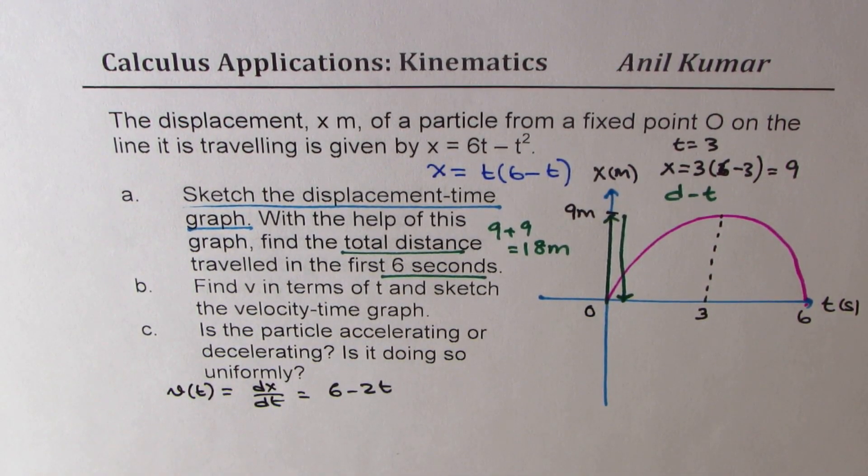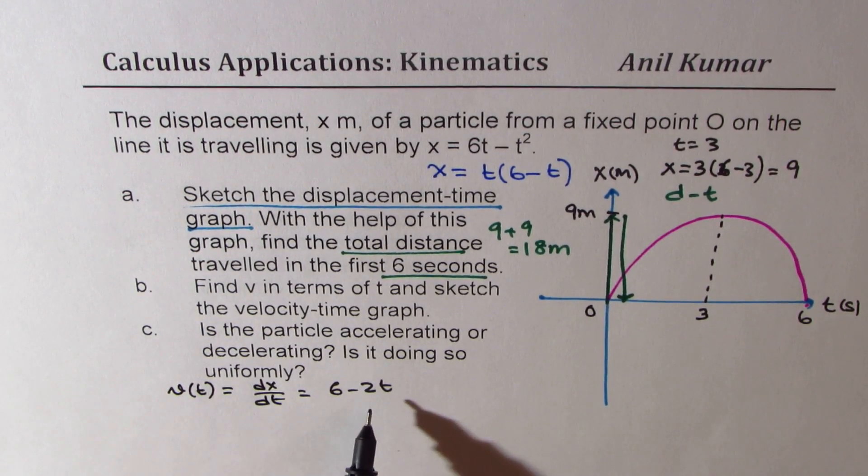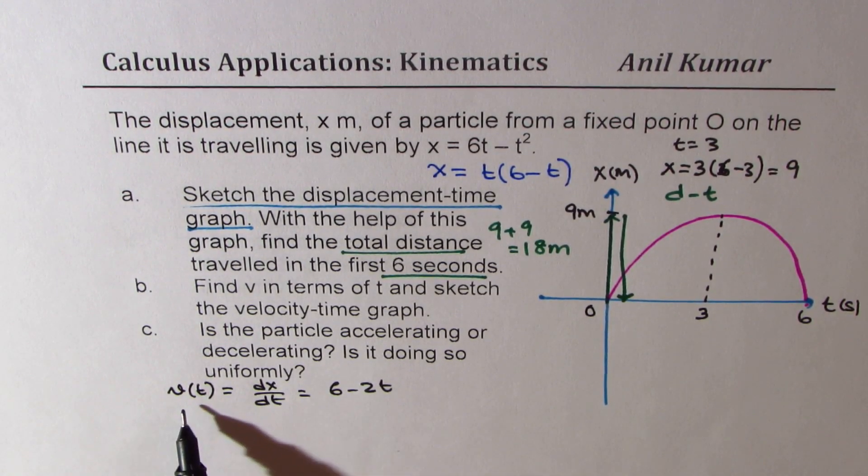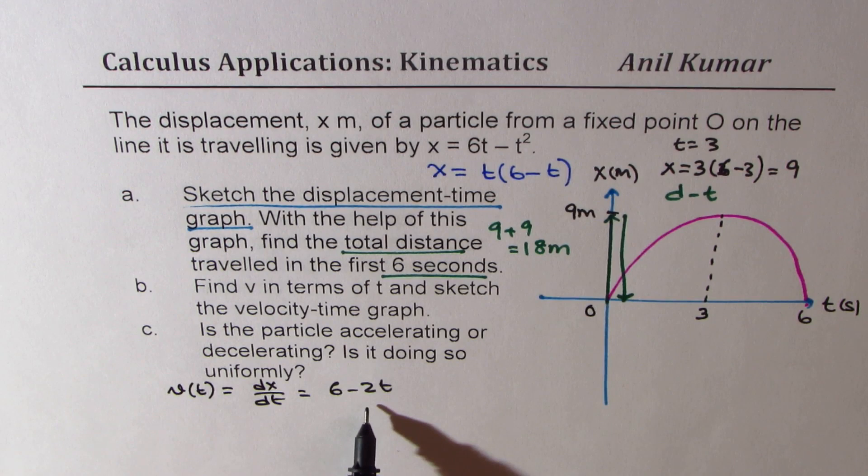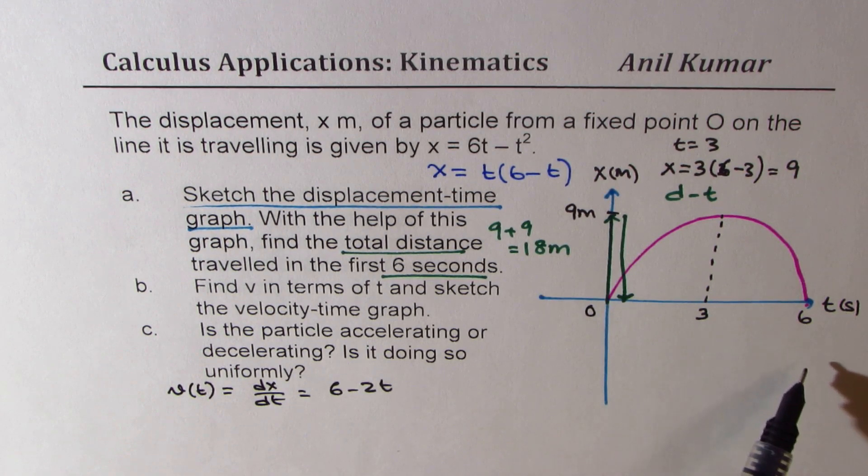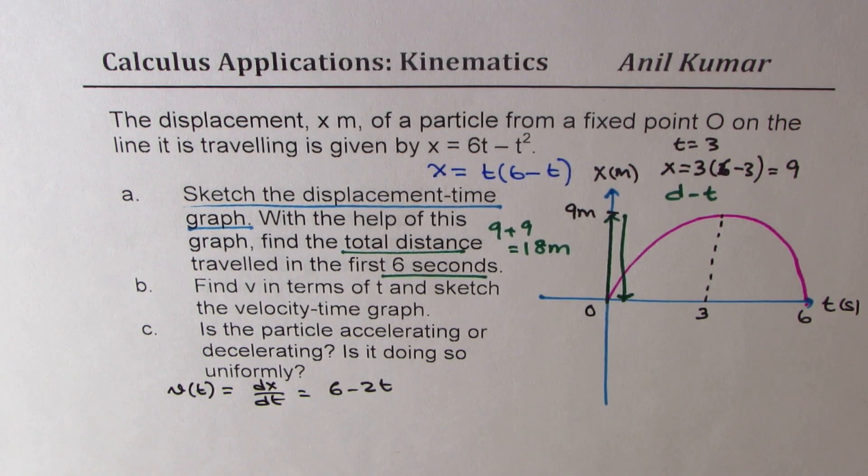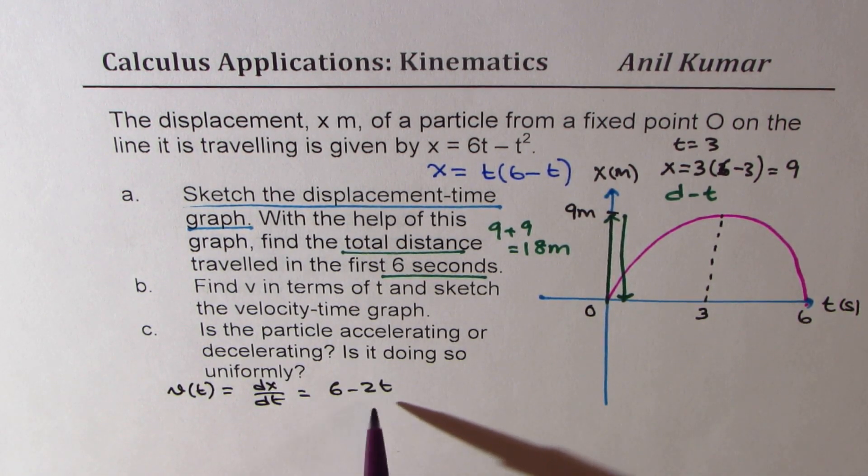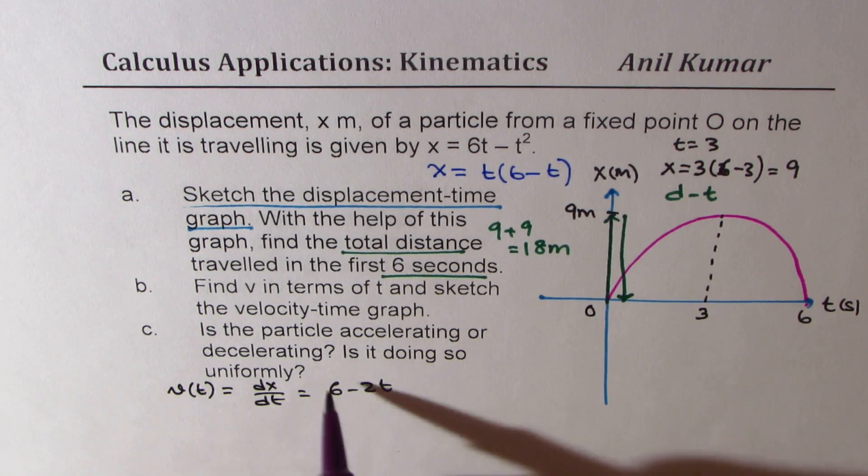Which is equal to derivative of 6t minus t squared which is 6 minus 2t. Now, from here we can actually sketch the velocity time graph. We see it is linear with a slope of minus 2. That means it's kind of going downwards. So the velocity time graph can be sketched from here and we can get the values for different values of t.